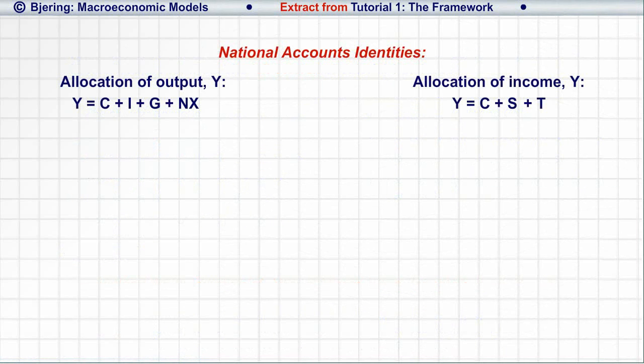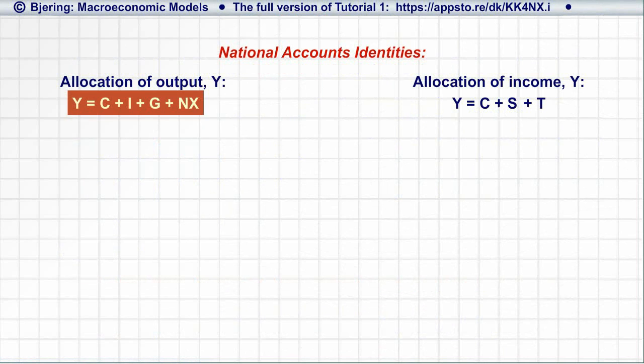It appears from the identities that Y may be computed either directly as the economy's output or indirectly as the sum of consumption, investment, government expenditure, and net exports.